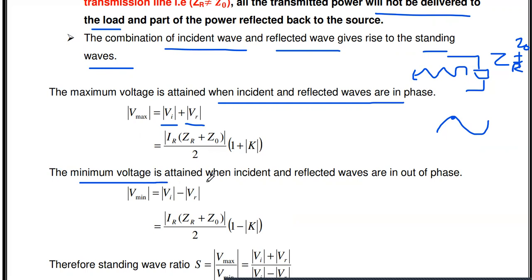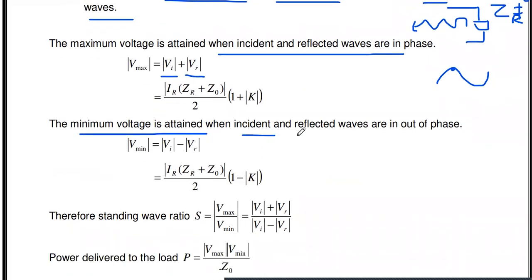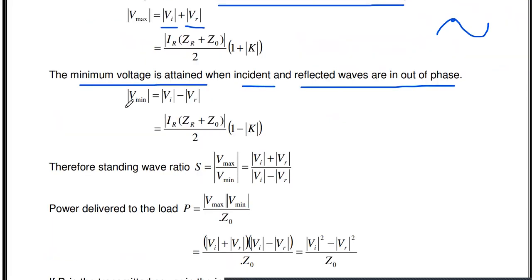Similarly, the minimum voltage is attained when the incident and reflected waves are out of phase. When the incident wave and reflected wave are out of phase, the standing wave reaches minimum voltage. V min is written as the subtraction of the incident voltage and reflected voltage: V_I minus V_R. The V min value is I_R(Z_R + Z_0)/2 × (1 − |K|).